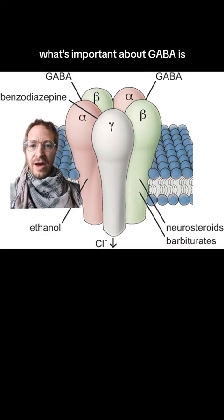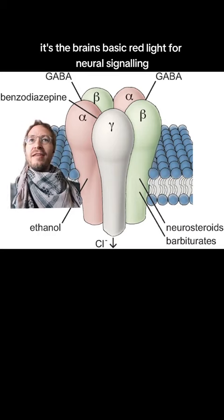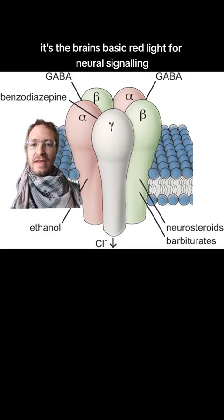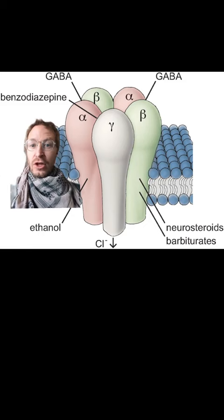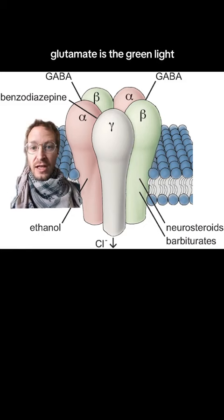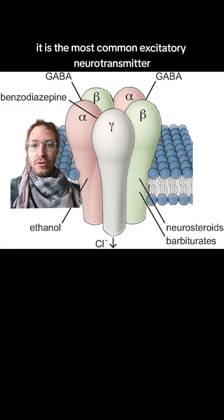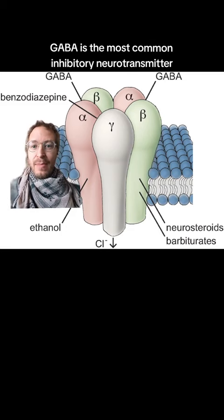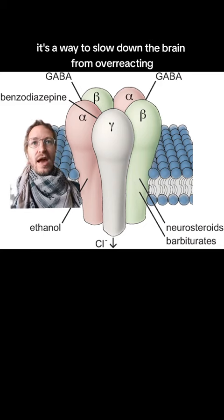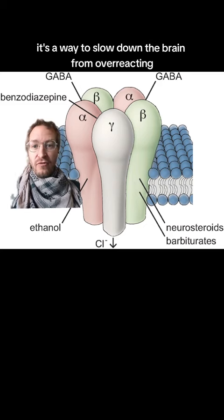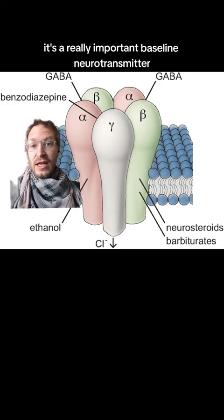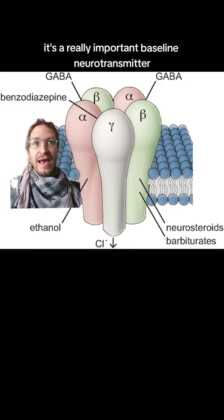What's important about GABA is it's the brain's basic red light for neural signaling. Glutamate is the green light — the most common excitatory neurotransmitter. GABA is the most common inhibitory neurotransmitter. It's a way to slow down the brain from overreacting. It's a really important baseline neurotransmitter.